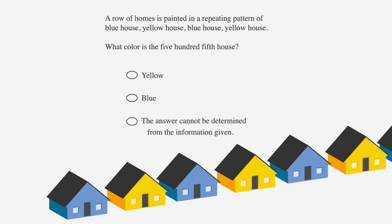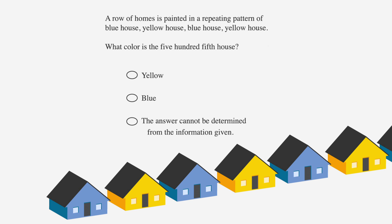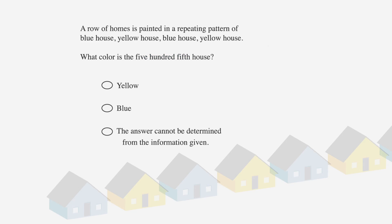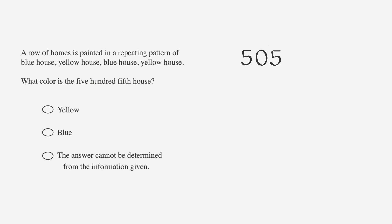A row of homes is painted in a repeating pattern of blue house, yellow house, blue house, yellow house. What color is the 505th house? Your answer choices are yellow, blue, and the answer cannot be determined from the information given. Well, the pattern has two steps: blue, then yellow. Let's see how many times it repeats in the line of 505 houses. We'll take 505, our number of houses, divided by 2, our number of steps.